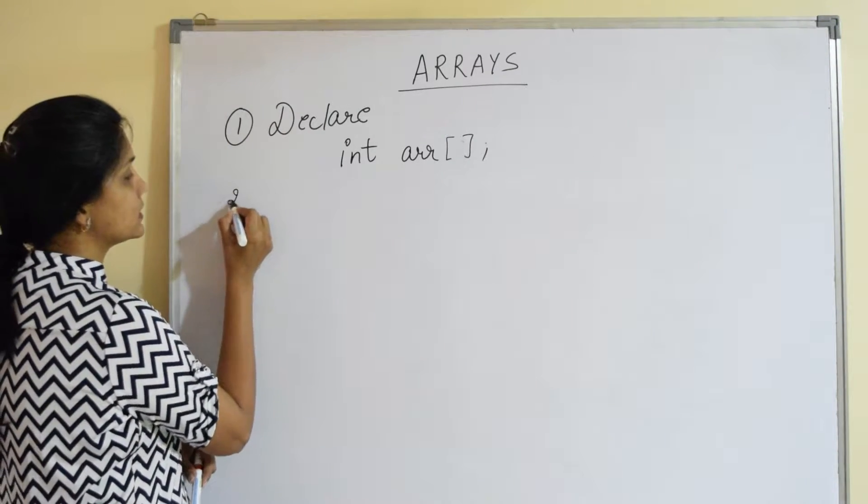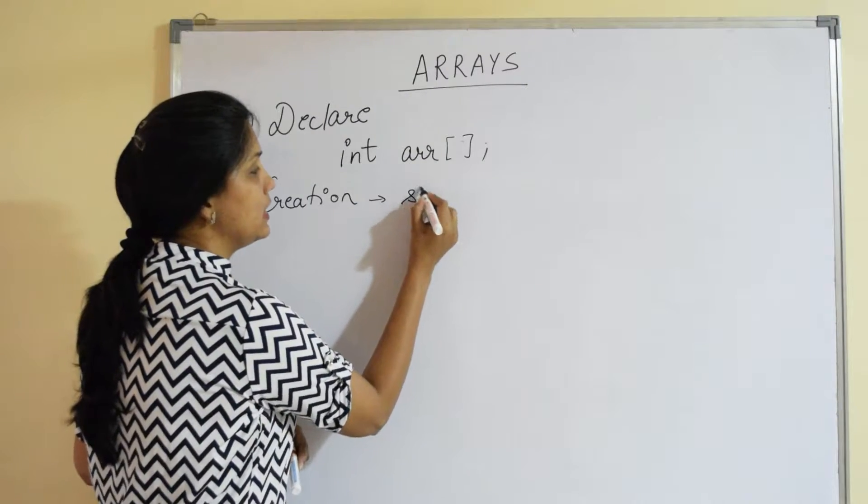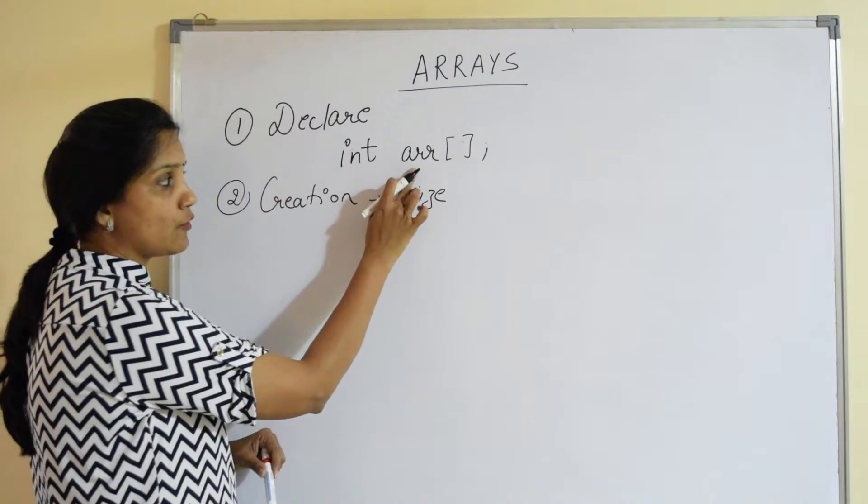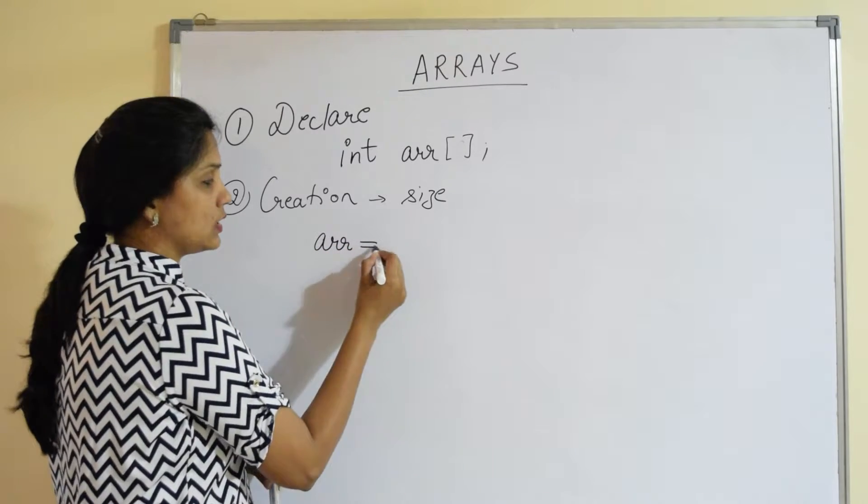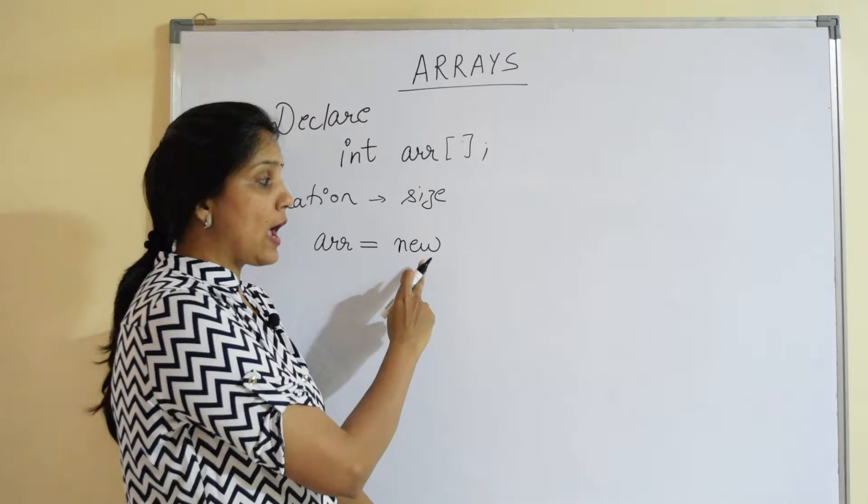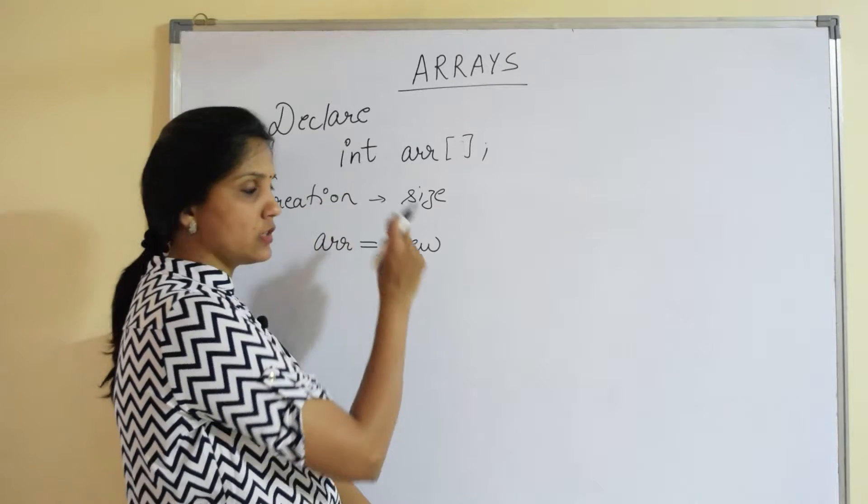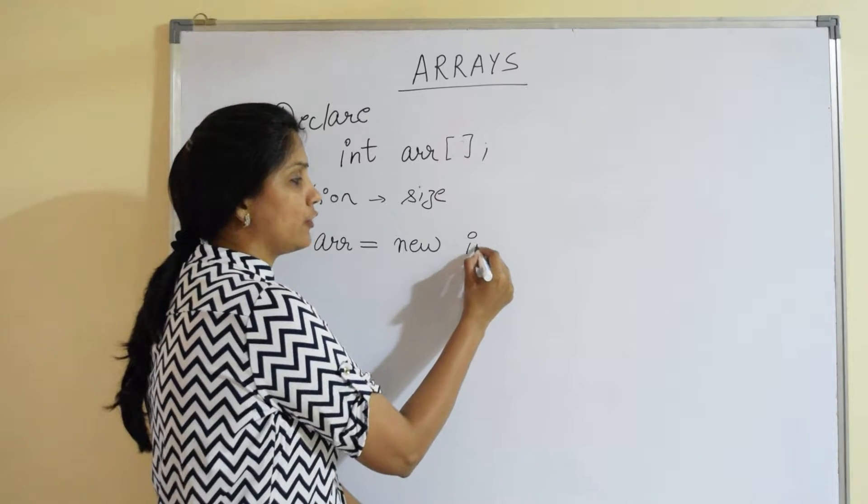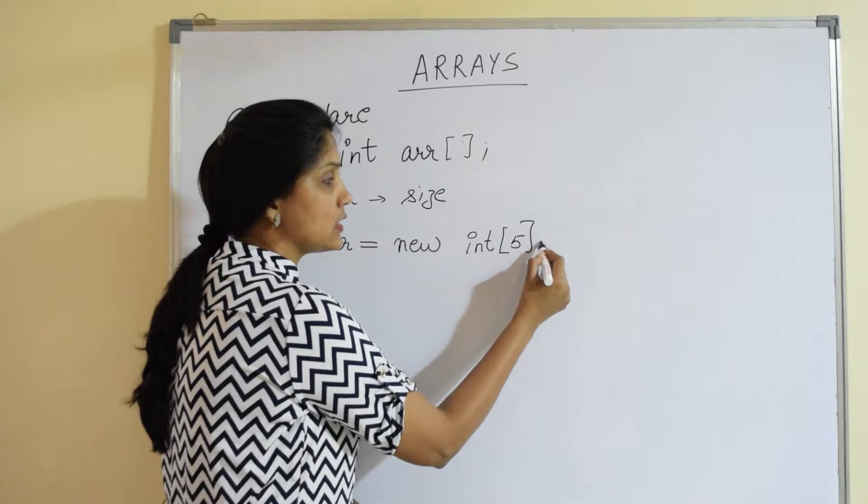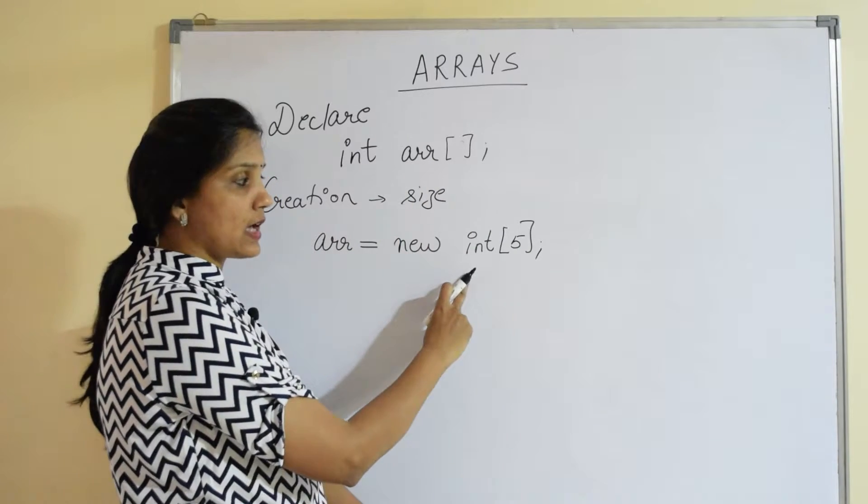That's where the second step comes into picture, that is creation. We need to create the array, that means we are basically defining the size or how many elements an array can store. To define the size, we have already declared the array. So the variable name is equals to, we use a special keyword called new. This keyword basically helps you to allocate memory for an array. We need to allocate memory for values of type integers. So we say new, allocate memory for values of type integer and I want to store five integer values. So in the square brackets, I write the size. Make sure you do not write the size at the time of declaration, but you write the size at the time of creation.